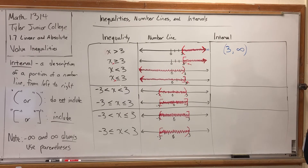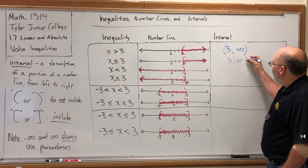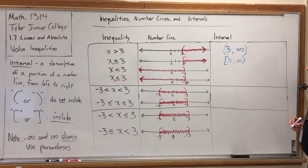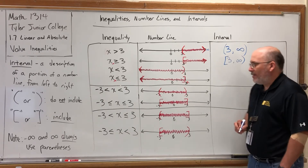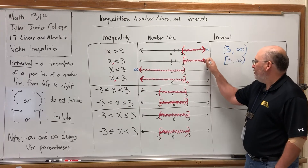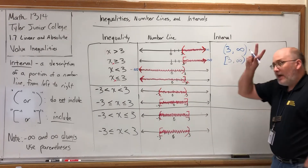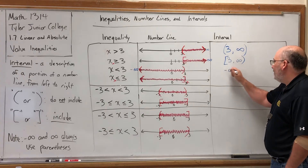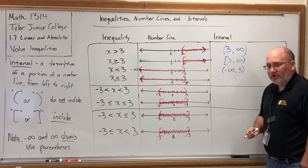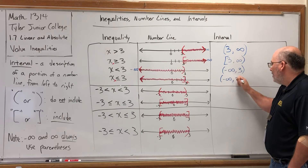For x is greater than or equal to three, the interval still starts at three and goes to infinity, but since three is included, it gets a bracket. For x is less than three, you always describe left to right — it begins at negative infinity, comma, and ends at three. Infinities always get parentheses, and this three has a parenthesis because it is not included. For x is less than or equal to three, it's the same except the three has a bracket: parenthesis, negative infinity, comma, three, bracket.